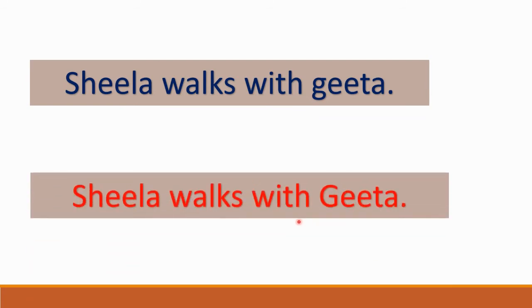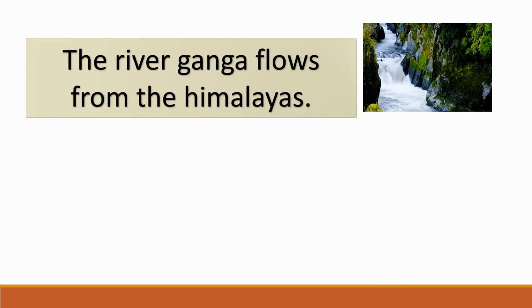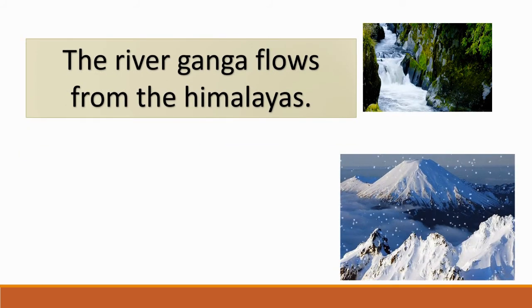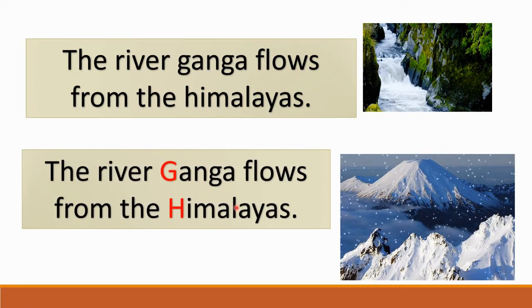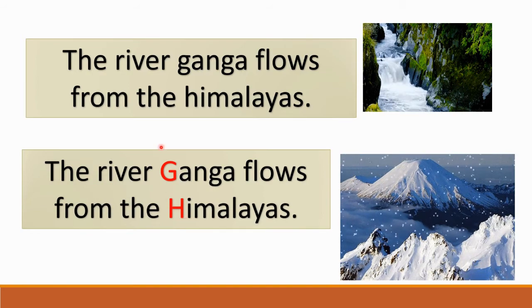In the next sentence, Shila and Gita are proper nouns, so the initial letters are capital. Remember: the first letter of a proper noun must be capital. 'The river Ganga flows from the Himalayas.' Ganga is the name of a river and Himalayas is the name of a mountain range, so both are capitalized. Name of rivers and mountains always begin with a capital letter.